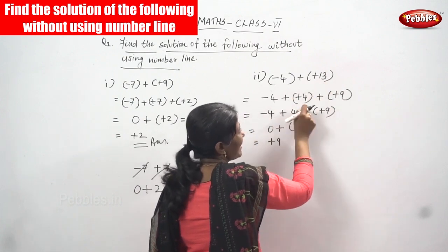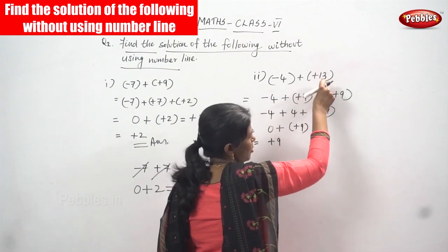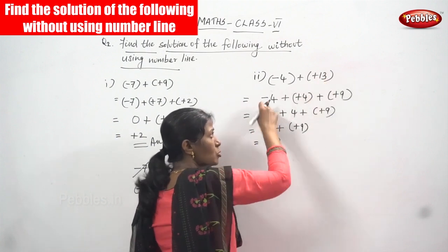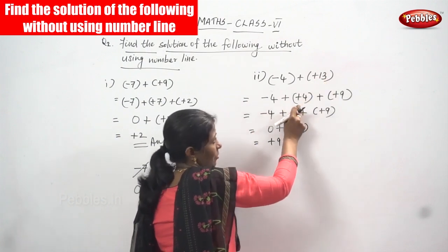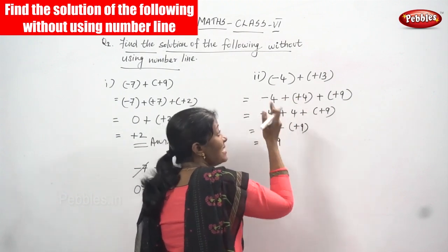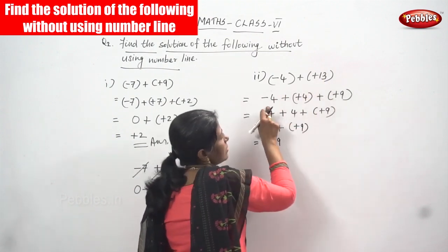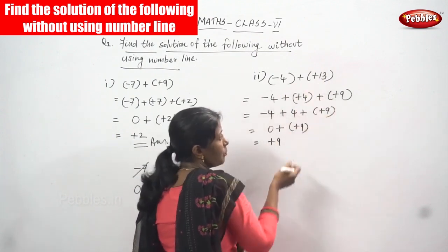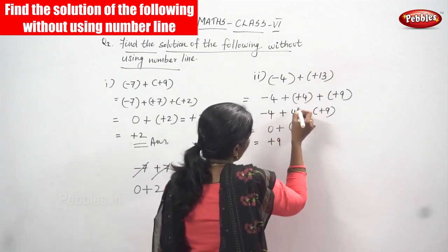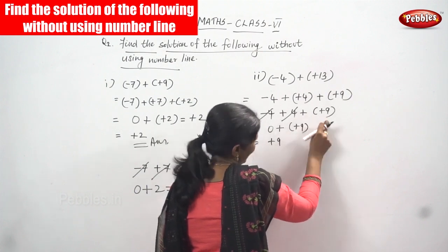So for minus four, you split plus thirteen into plus four plus plus nine, because then only you can cancel the minus four. According to the negative integer, you have to split the positive integer. For example, if there is minus five, you put plus five; if there is minus six, you put plus six. So according to the negative integer you split the positive integer, so minus four and plus four will cancel.